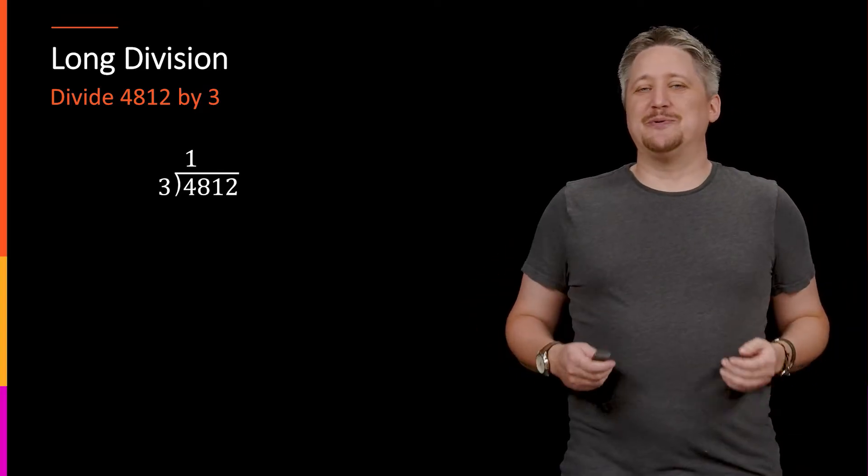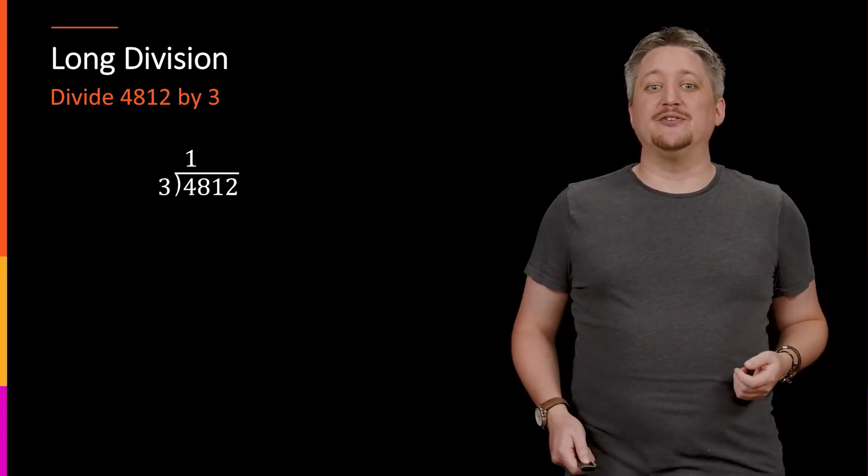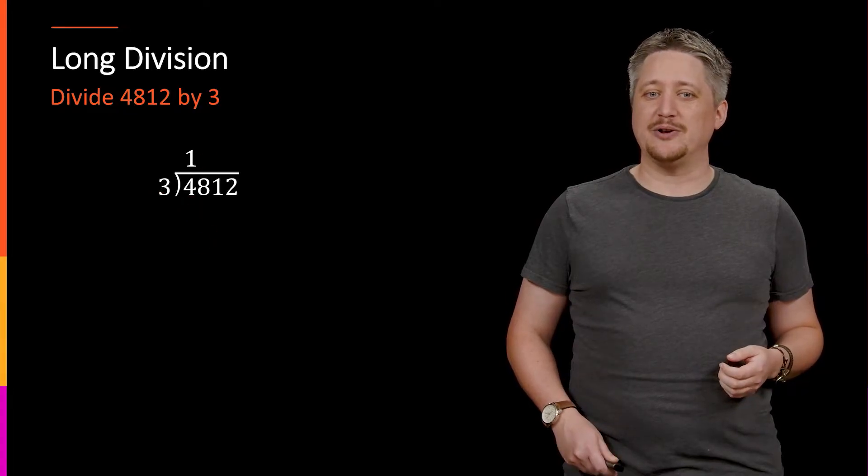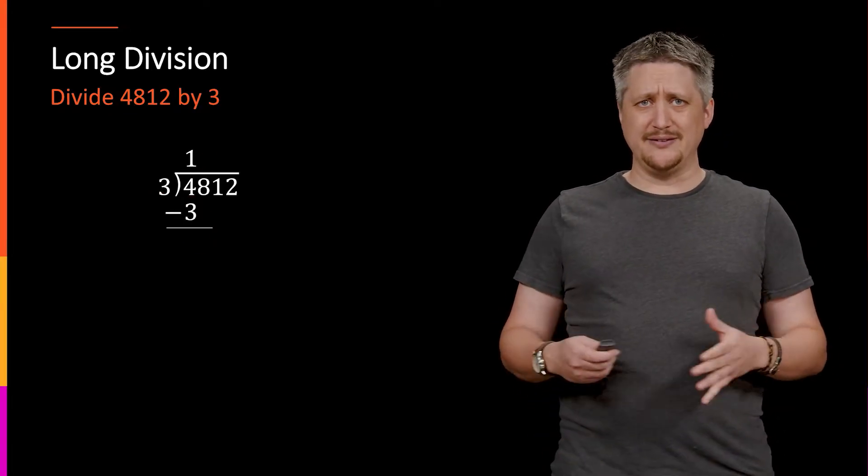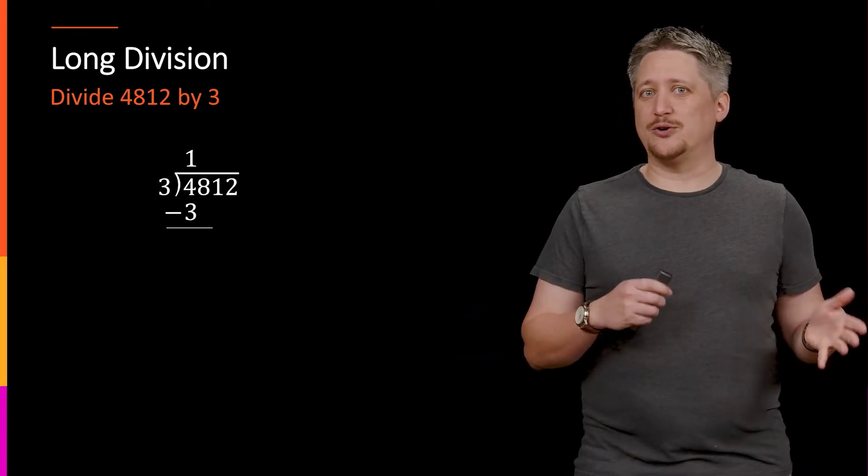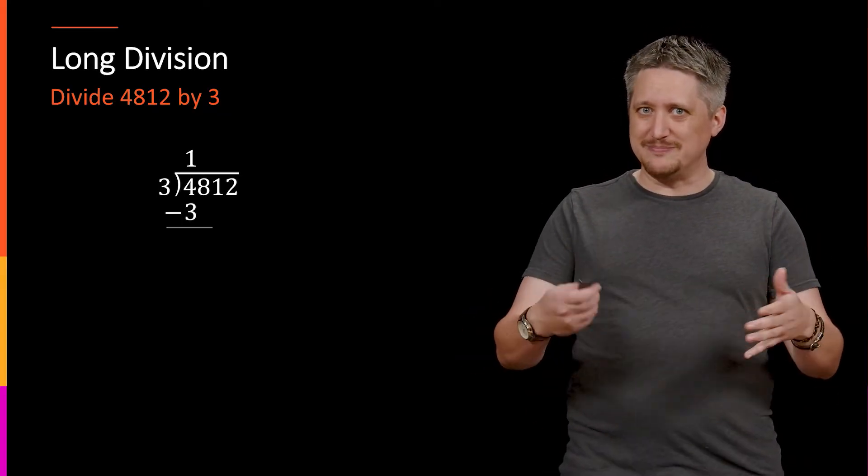But technically, you're supposed to write the number first and then multiply those two numbers to get what you're after. The three times one gives you a three and that's how you write three underneath. Again, doesn't really matter for numbers. Turns out this is actually sort of important with polynomials, which is why I'm making that point now.